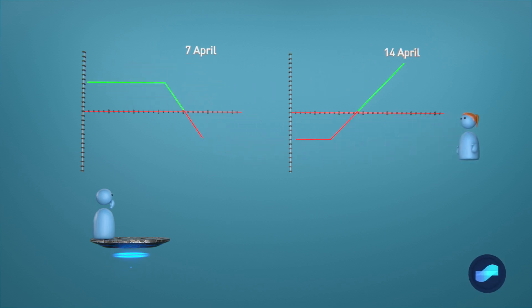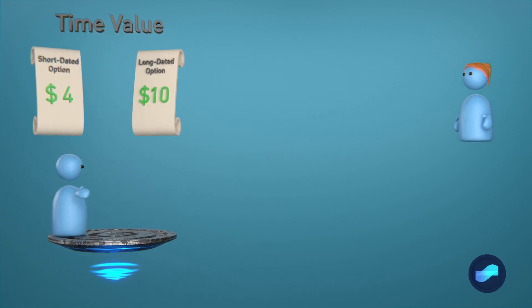Usually, all else equal, the decay is much faster for the option with a shorter expiration than the one with a longer expiration. So essentially, we're selling something with faster depreciation in value and buying something with slower depreciation in value, and the difference is our profit.